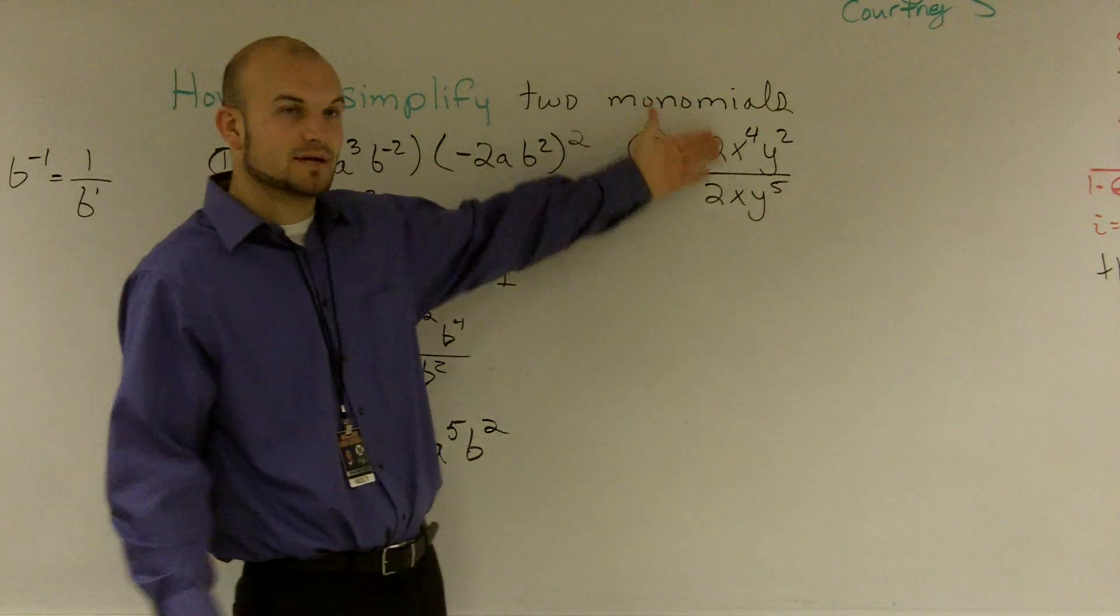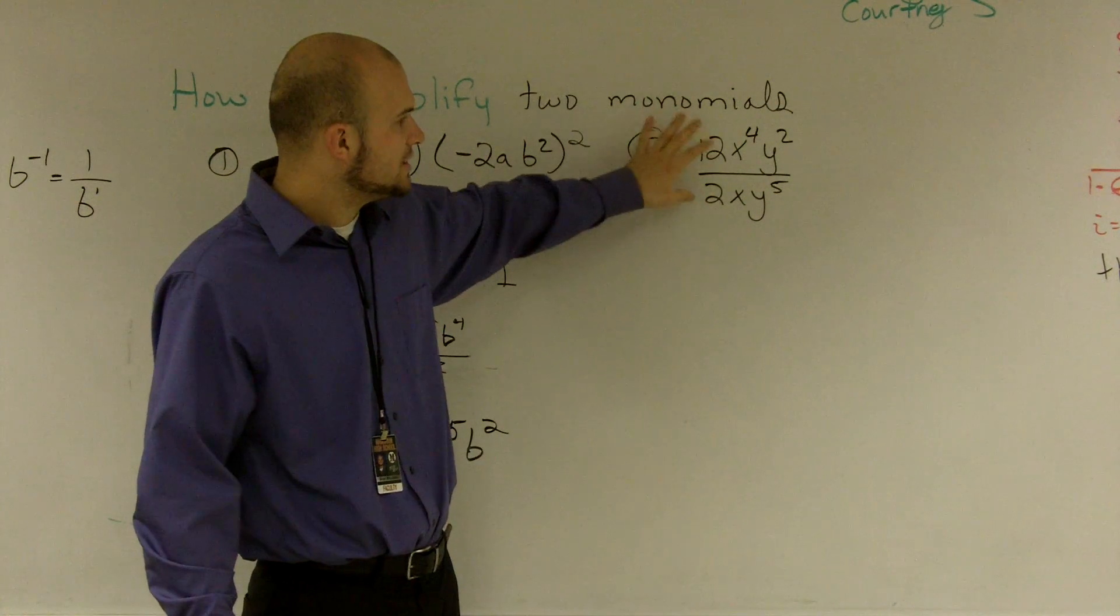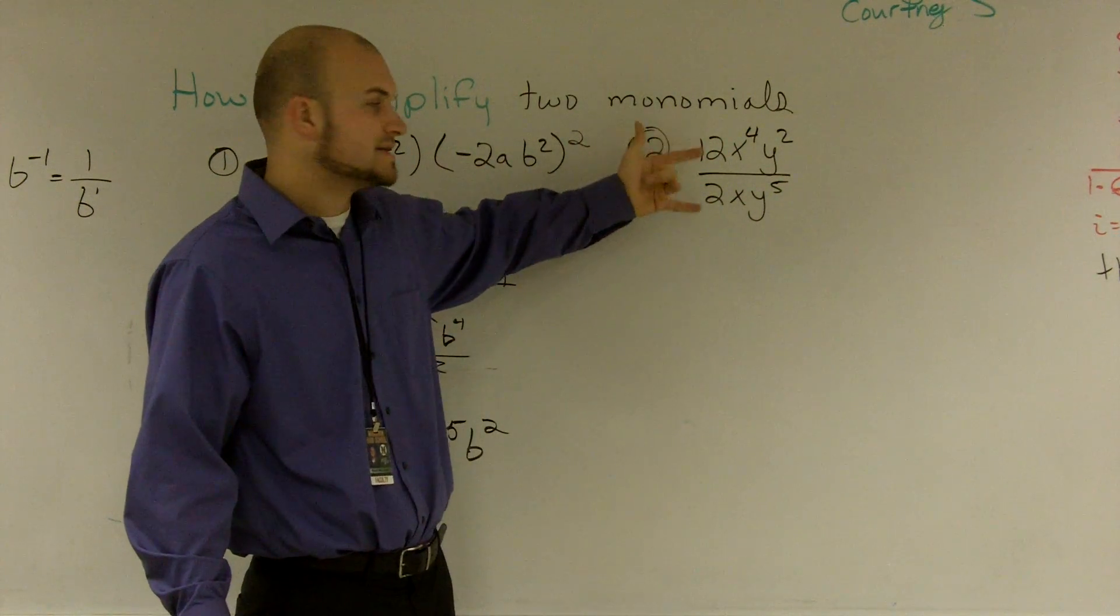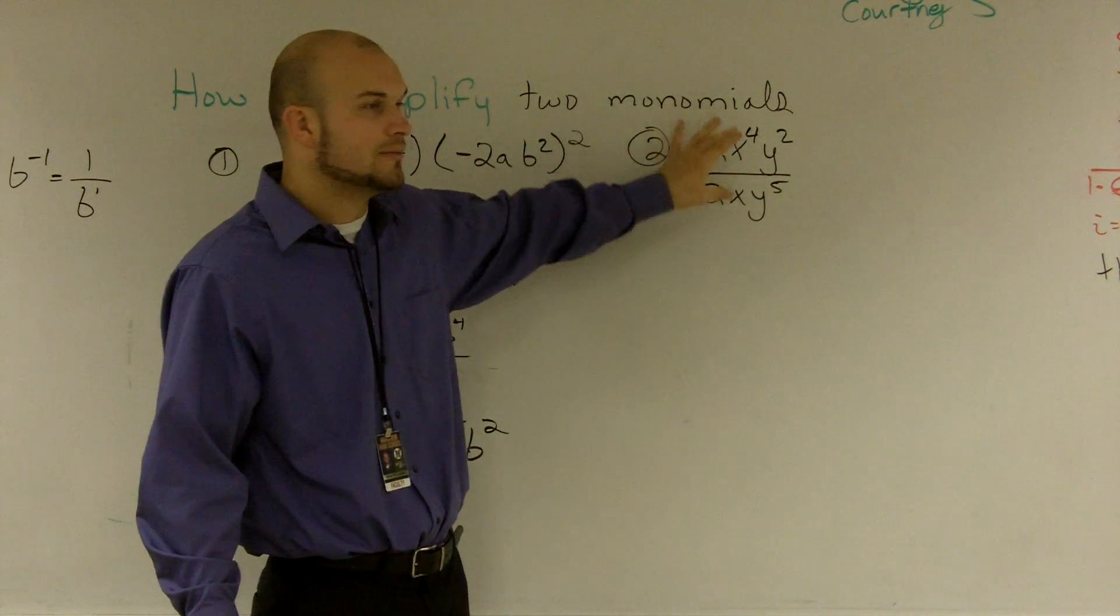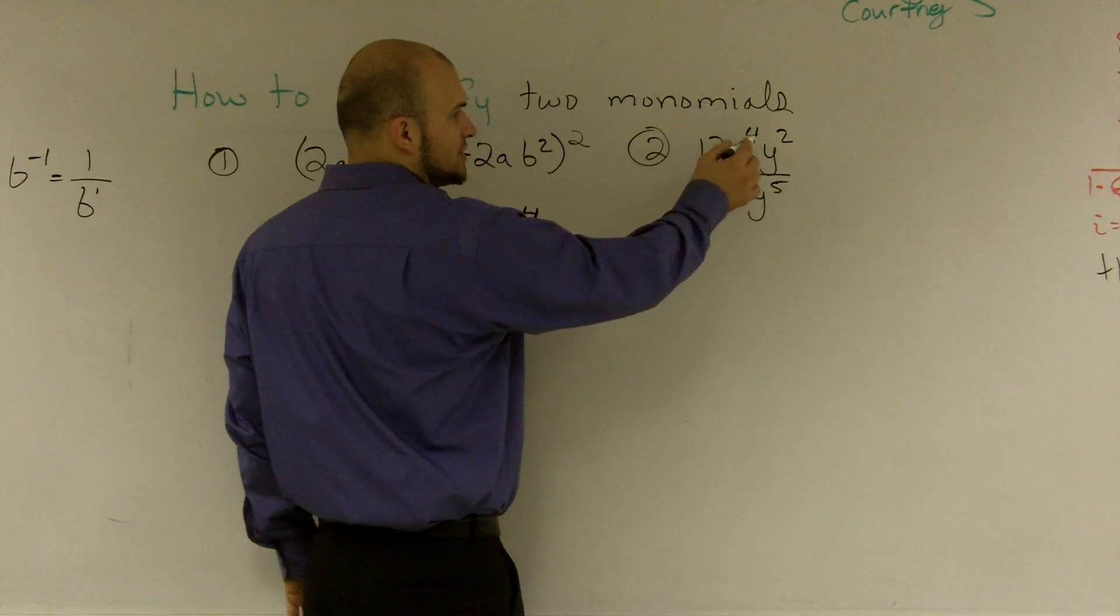Over here, when I already have something as a rational, what I need to do is I need to, again, to make this a monomial, I need to make sure that all my x's and y's are simplified to their lowest term. So, again, what I'm simply going to do is if it doesn't have an exponent, we know it's 1.